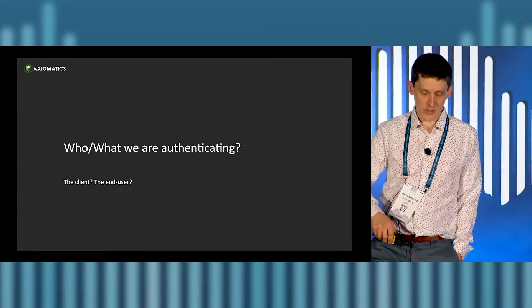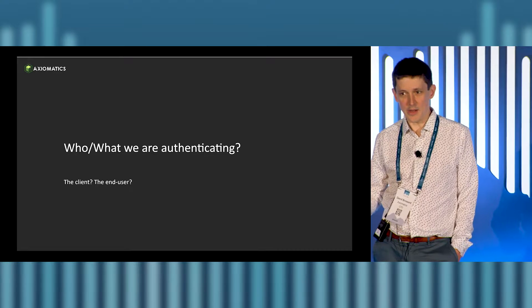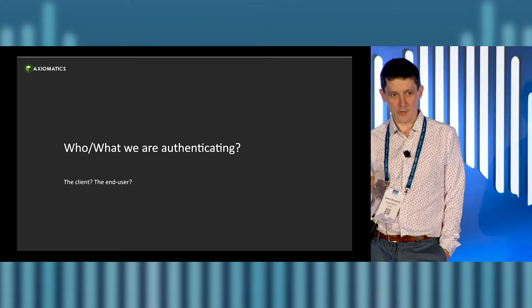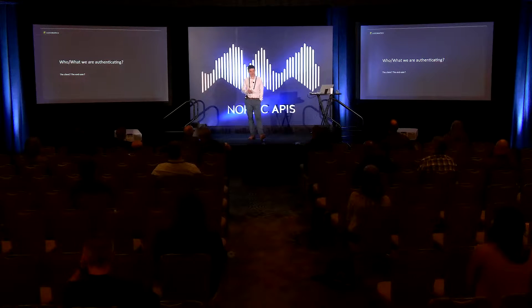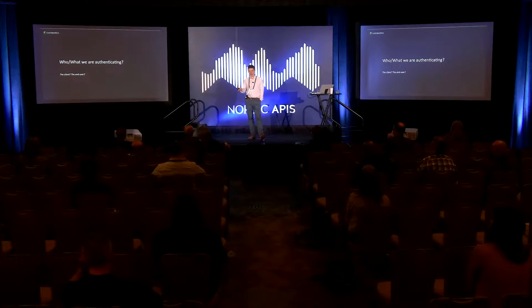One side question is: what is it we're authenticating? When I started with APIs way back when, authentication was really about the client talking to the API, not so much the end user identity. When we deal with authorization, we're way more interested in the end user identity than the client identity. You've got to fix both, but the client is just the plumbing. What we care about in authorization is the end user, the end person, the end entity — and it could also be a process, a service, many different things.